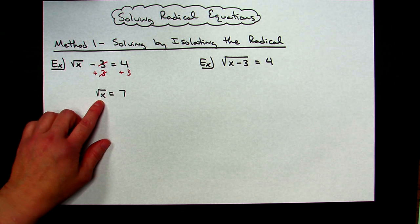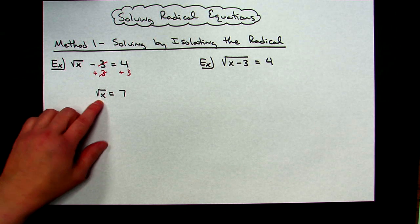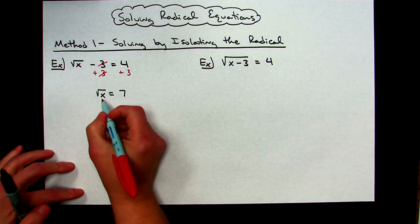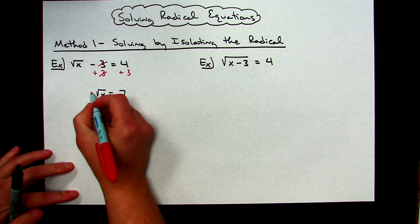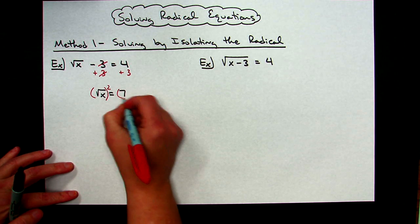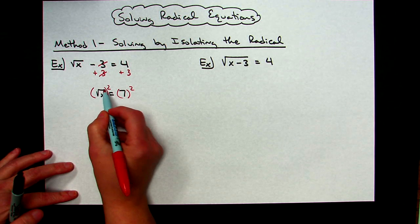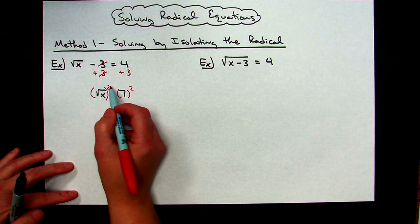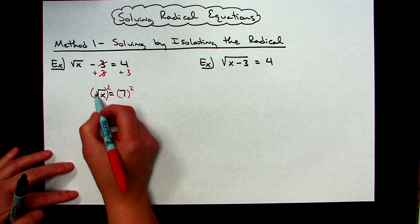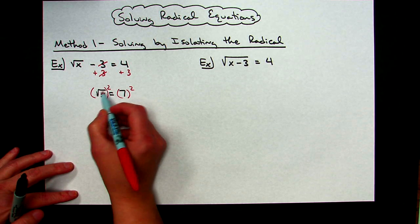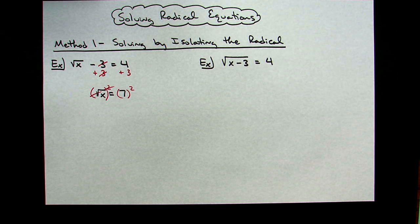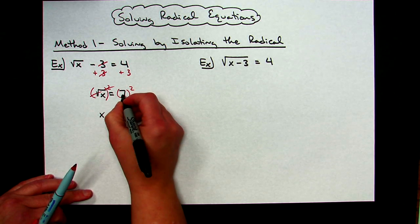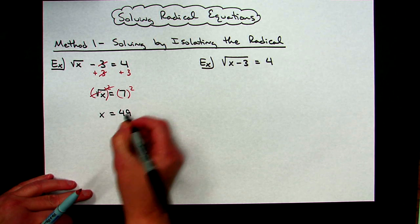Right here I see the square root of x. The opposite of taking the square root of a number is squaring a number. So my inverse operation in this step would be to square both sides of the equation. When an operation undoes the other one, they're inverse operations — they get rid of each other. The square root and the squaring get rid of each other, leaving us with x on this side, and seven squared is 49. So x equals 49.